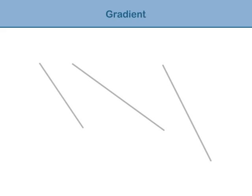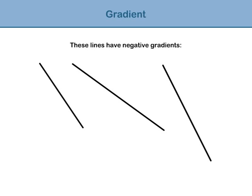All lines which fall from left to right are said to have a negative gradient. We use exactly the same approach to calculate lines which have a negative gradient as we did to calculate lines with a positive gradient.